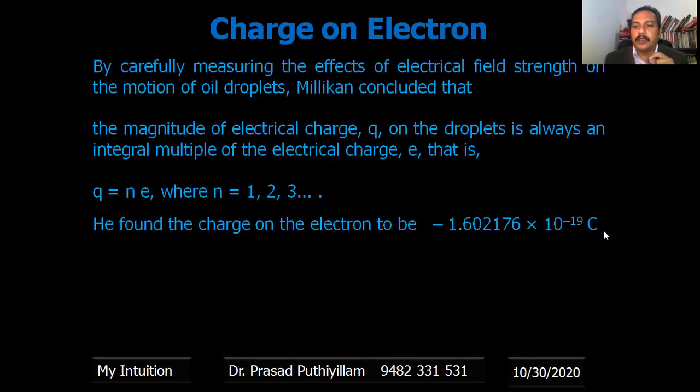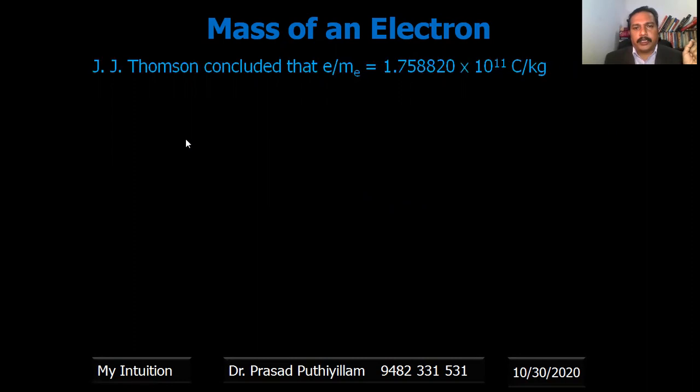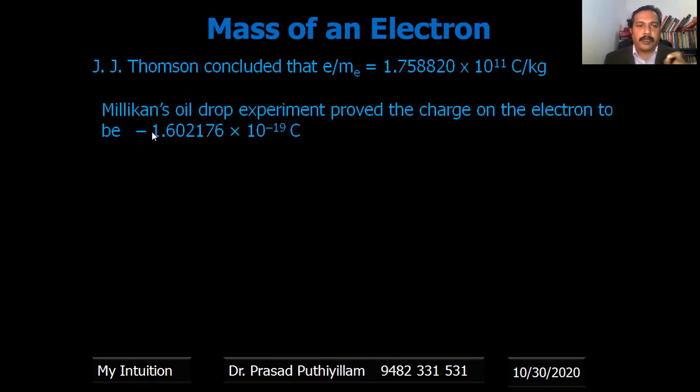Now mass of an electron. We know the experiment conducted by J.J. Thompson concluded that charge to mass ratio is 1.758820 × 10^11 coulombs per kilogram. Now we got the charge of electron by Millikan's oil drop experiment, so on substituting e here, that is 1.602176 × 10^-19 coulombs.